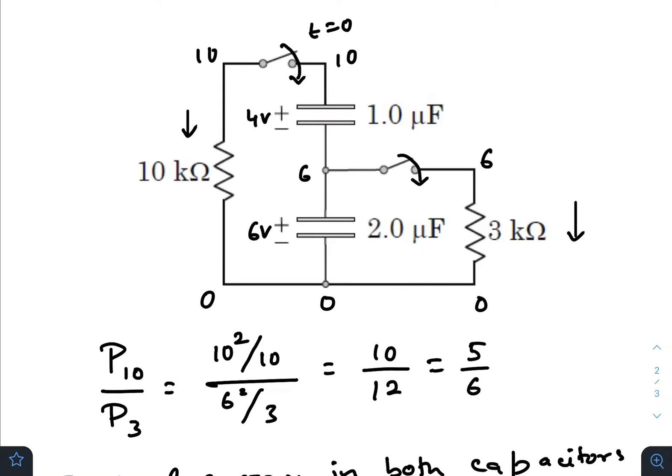As you can see, this is the circuit at t equals 0. This capacitor has been charged by a potential difference of 6 volts, this one is the positive polarity, negative. Similarly, this one has been charged with a potential difference of 4 volts.